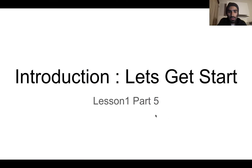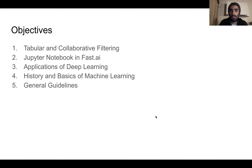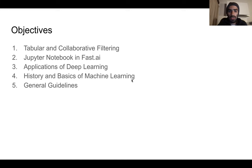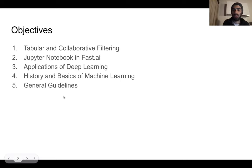Welcome everyone to deep learning course series, lesson number one, part five. In this lesson, we are discussing about tabular and collaborative filtering techniques with deep learning. Other topics include Jupyter notebooks in fast.ai, applications of deep learning, the history and basics of machine learning techniques, and general guidelines on how you can explore resources and share your work.